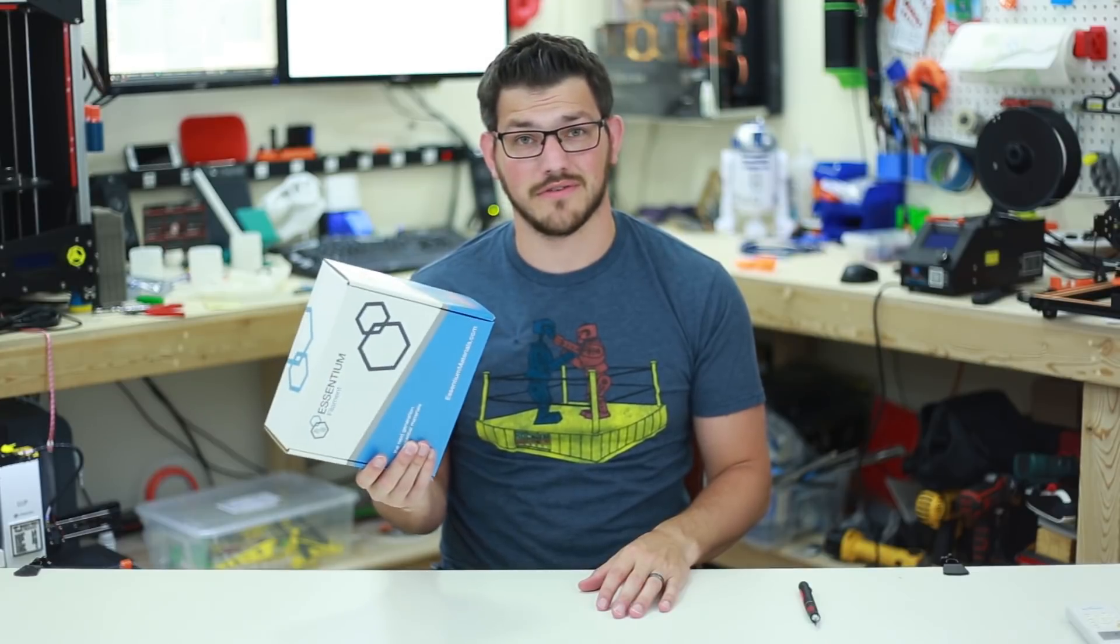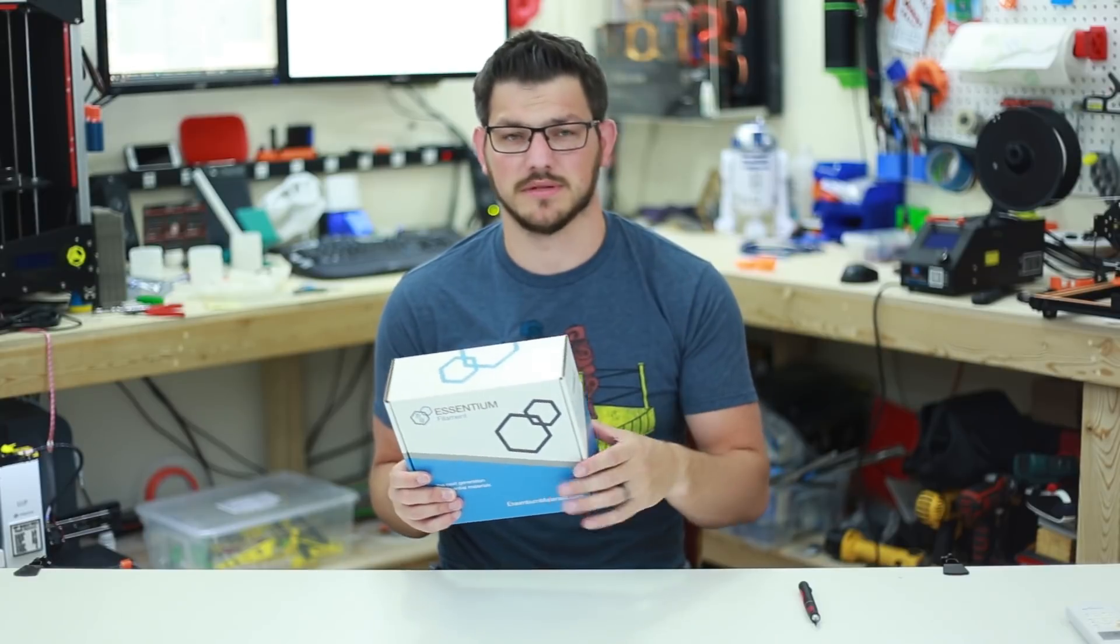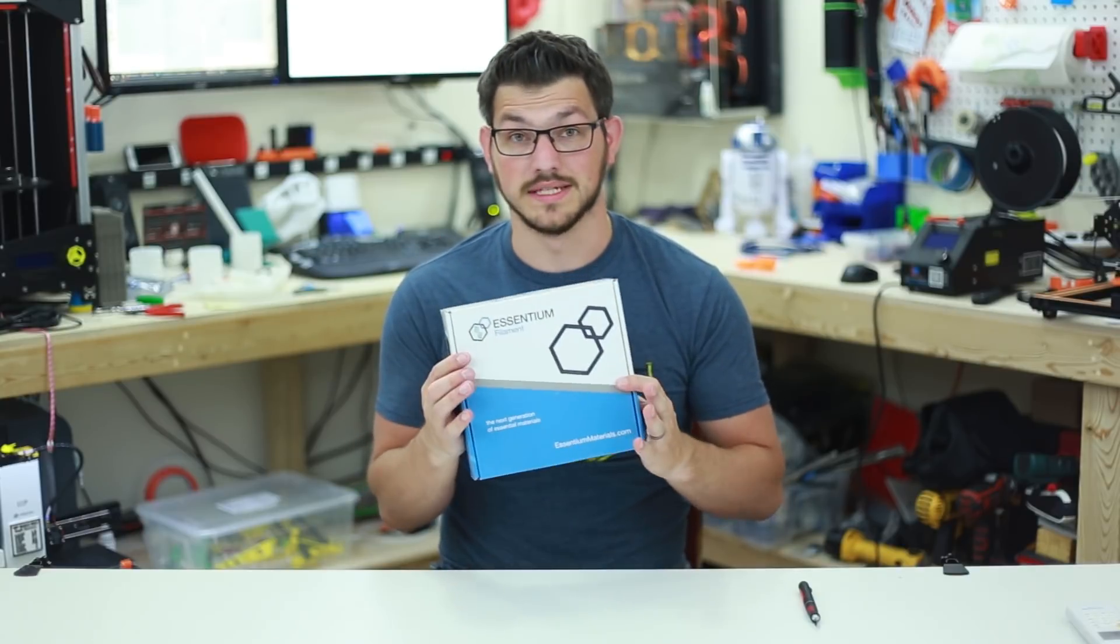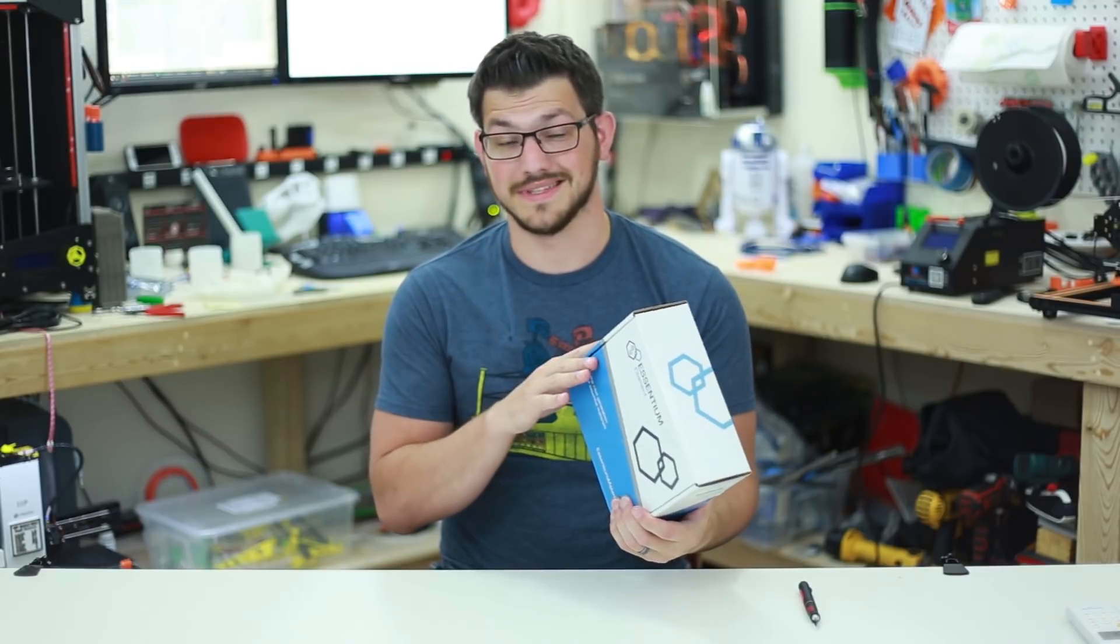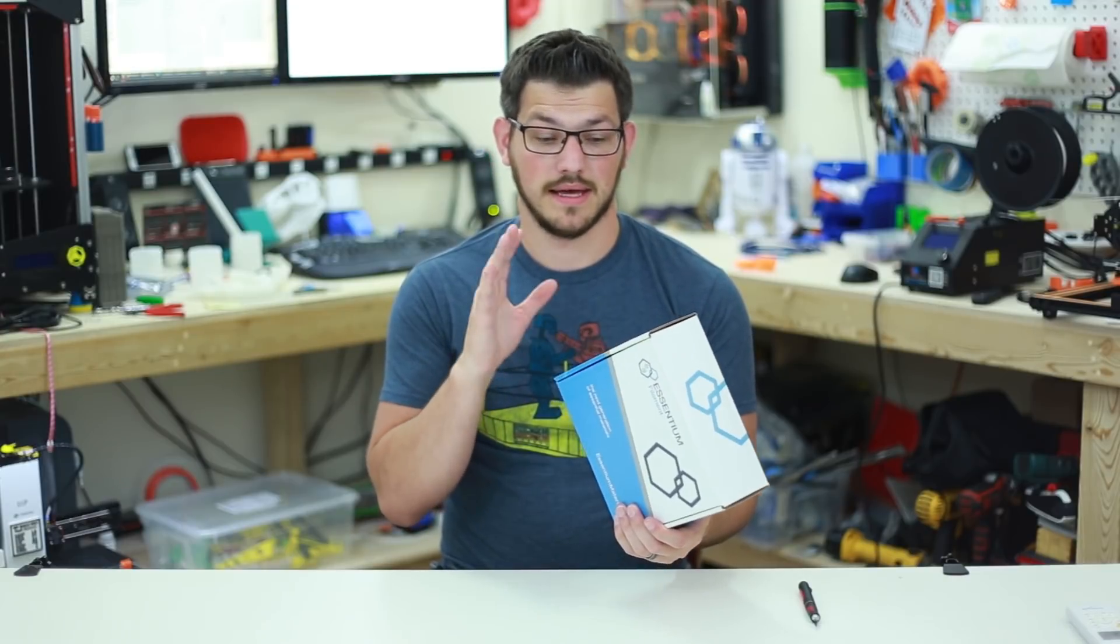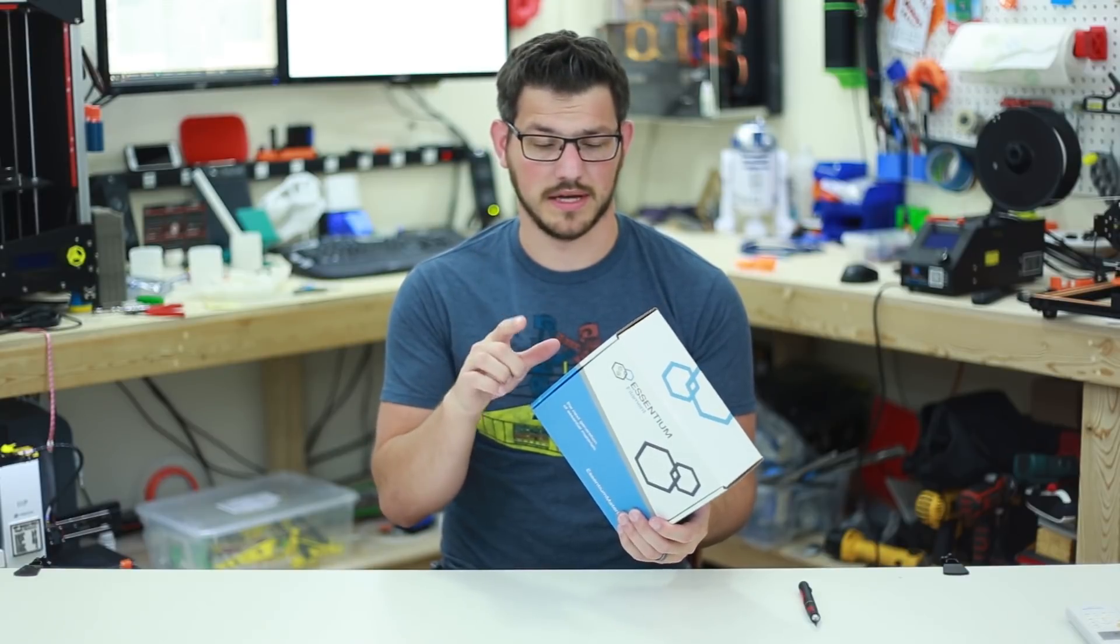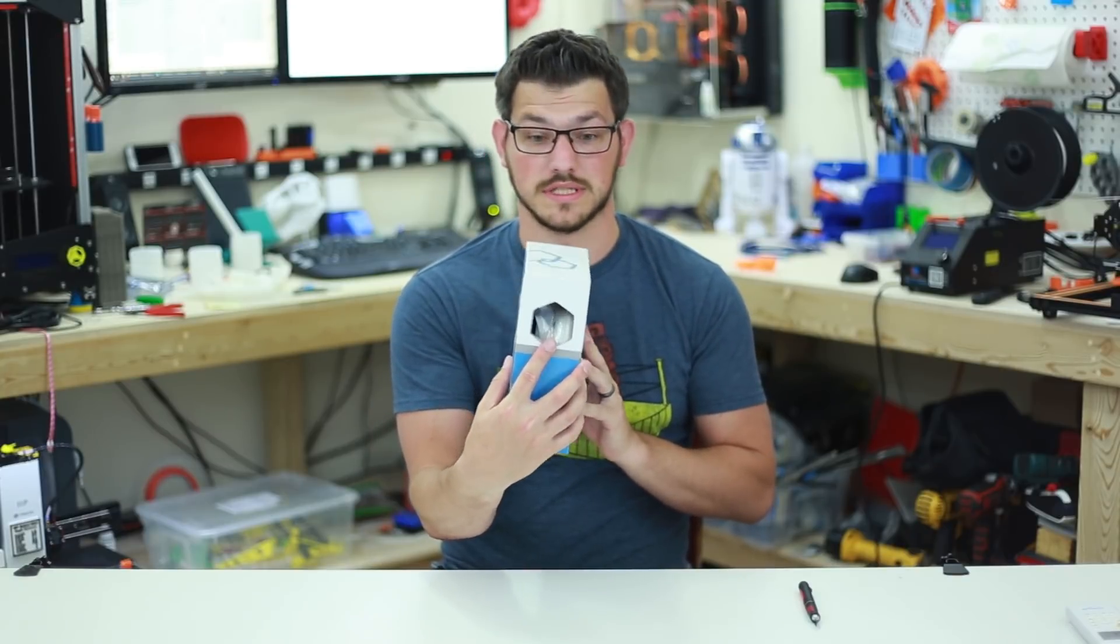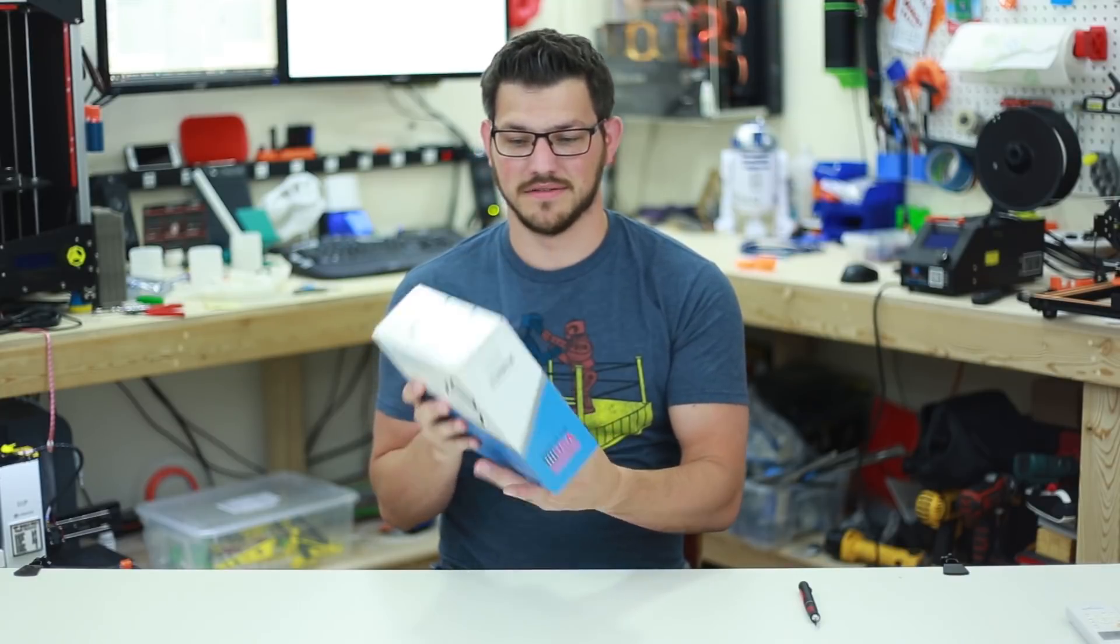So here we have a 750 gram roll, not quite a kilogram. Some companies do that with these more specialty filaments, they don't do a full kilogram, they'll do 750 or even 500. Looking at the box, it's colorful, tells you it's Ascentium filament. Right here is the sticker. This is the exact same box that their PLA came in that I tested a while back. There's a little window right here so you can see what's inside, and the lovely Made in the USA stamp on there, I love that.